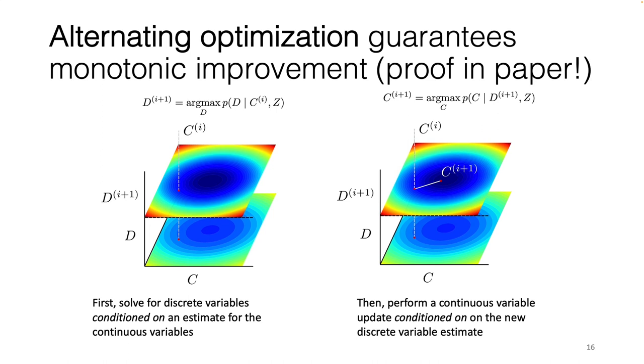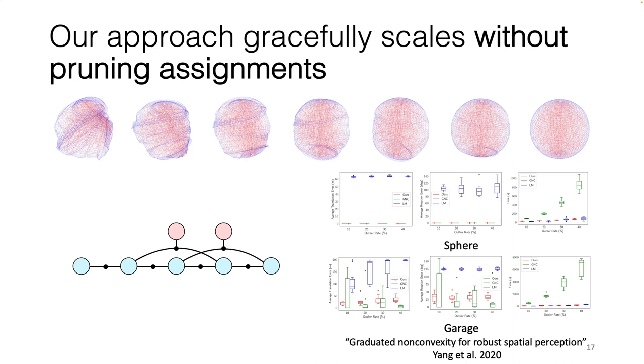Leveraging this idea, we start by supplying an initial guess to the continuous states. Then, we alternate between optimizing discrete states given those continuous states and vice versa. We prove in our paper that this guarantees monotonic improvement in the objective.